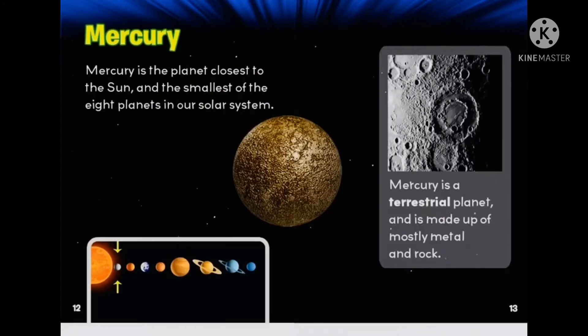Mercury is the planet closest to the sun and the smallest of the eight planets in our solar system. Mercury is a terrestrial planet and is made up of mostly metal and rock.